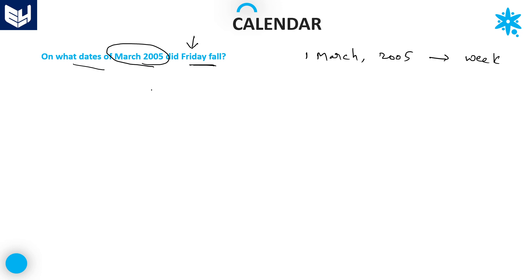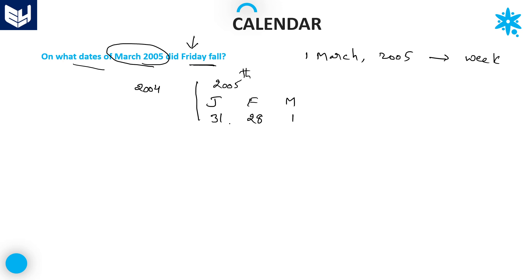For 1st March 2005, as we already discussed in the last sessions, on the left-hand side we write the completed years and on the right-hand side is the running year 2005. That is the running year and it is a normal year, so February has 28 days only. January has 31 days, February has 28 days, and in March I am taking only 1 day.